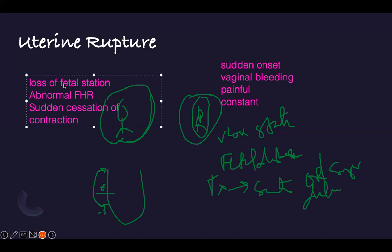Accreta and previa are painless bleeding — you need ultrasound to see exactly what is going on. Abruption and uterine rupture are painful bleeding and they are emergencies — acute onset, painful, that need to be taken care of right away. This is how you distinguish these four antepartum hemorrhage conditions using key buzzwords.